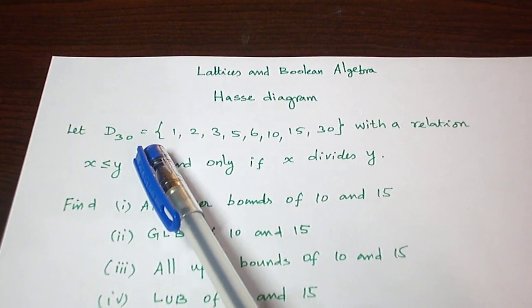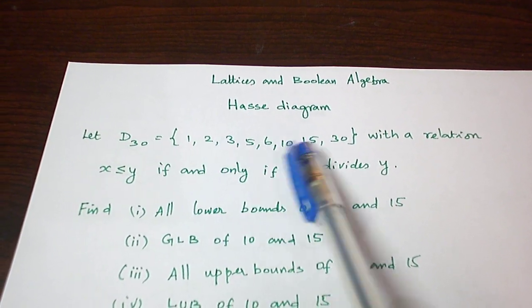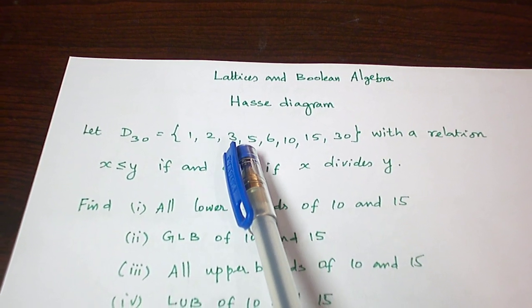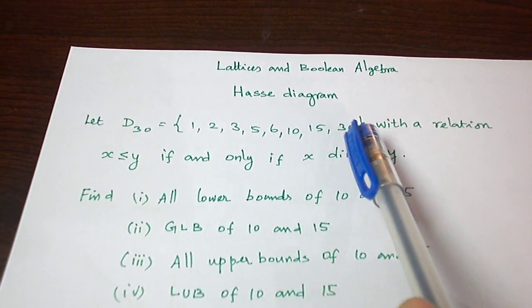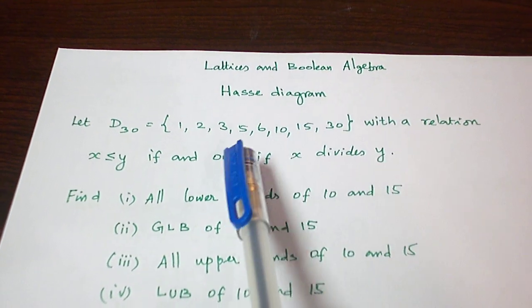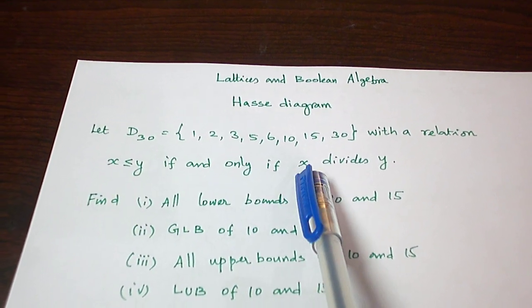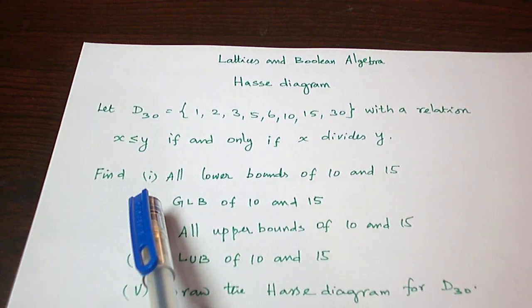This is a problem D30. The set of divisors of 30 are given: 1, 2, 3, 5, 6, 10, 15, 30 with a relation X is related to Y if and only if X divides Y.